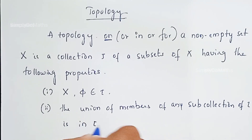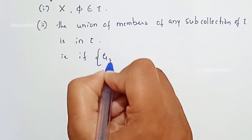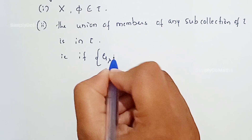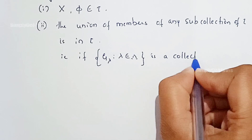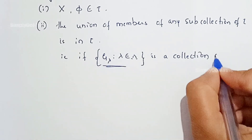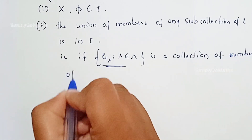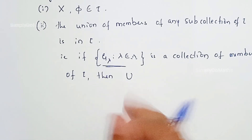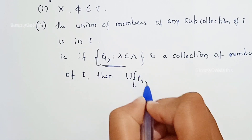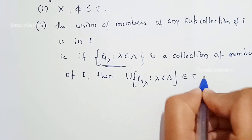More precisely, the union of members of any sub-collection of tau should be an element of tau. For this we use the notation: if the family {G_lambda}, where lambda belongs to an index set Z, is a collection of members of tau, then the union — denoted U — of G_lambda over lambda in Z should be an element of tau.